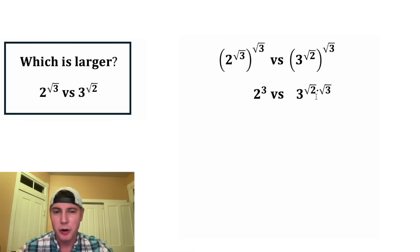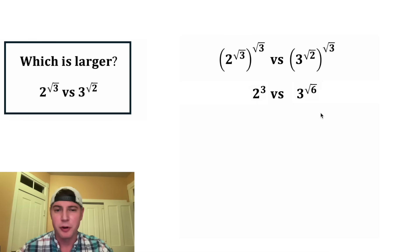But on the right-hand side, square root of two times square root of three is square root of six. Two cubed is equal to eight. That one's not too tough.